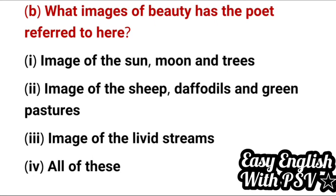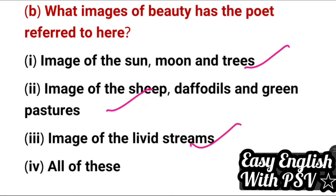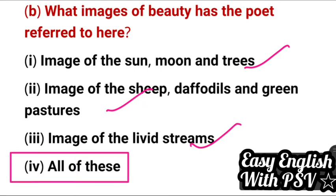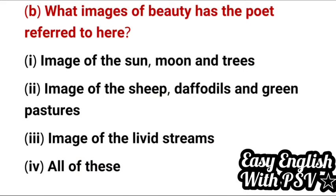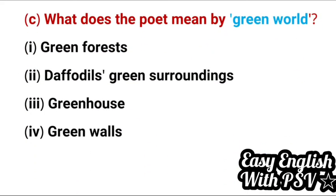Question 2: What images of beauty has the poet referred to here? Options: image of the sun, moon and trees; image of the sea, daffodils and green pastures; image of the livid streams. The correct answer is all of these. Question 3: What does the poet mean by 'green world'? What word has he used and for what purpose?